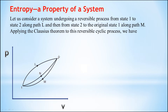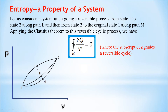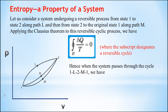So here we are considering two states for any reversible cycle 1 and 2. We know that according to the Clausius theorem, the cyclic integration of δQ/T equals zero, and it is applicable for a reversible cycle. So in this case we are considering a reversible cycle, so here we can apply the Clausius theorem.